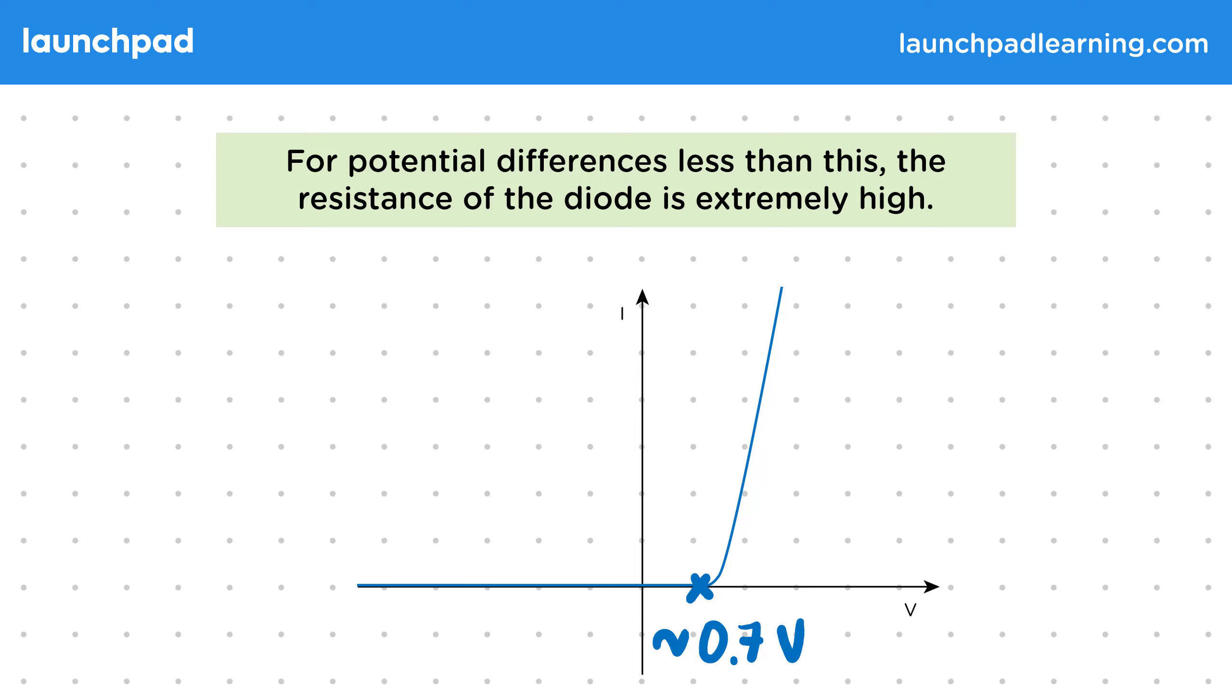In other words, when we've tried to reverse the direction of the current. Since the graph is now on the x-axis and none of these points have any y values, this shows there is no current flowing. The diode has stopped the current because we've gone below the threshold potential difference.